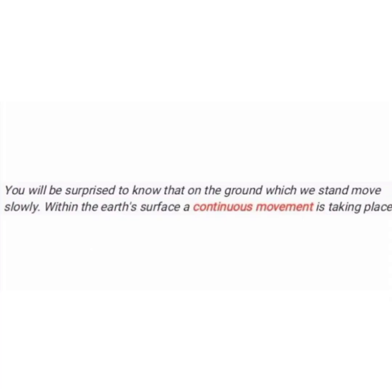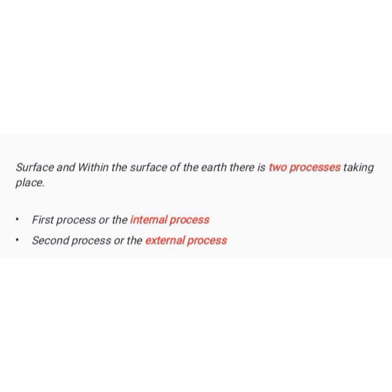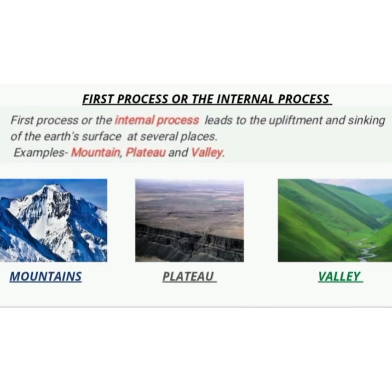You will be surprised to know that the ground on which we stand moves slowly. Within the earth's surface, there is always a continuous movement taking place. On the surface and within the surface of earth, there are two processes taking place. The first process, or the internal process, leads to the upliftment and sinking of the earth's surface at several places. The examples are mountains, plateaus and valleys.